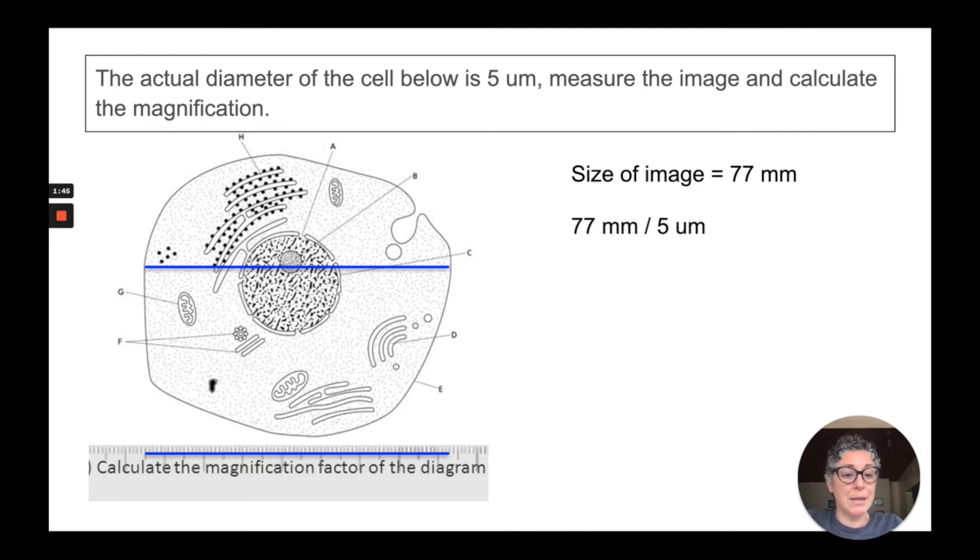If we were going to calculate magnification, magnification is the size of the image divided by the actual size. So if we set up our math problem we've got 77 millimeters divided by 5 micrometers. Now we have a problem because we have two different units in our math formula and we need to convert one of them.